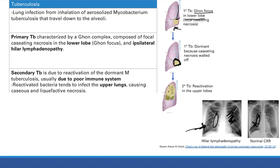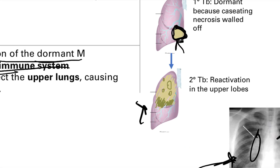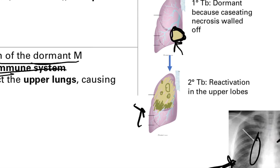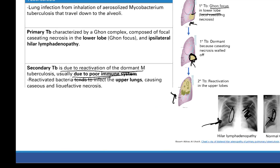You can get secondary TB if you reactivate this dormant TB, usually due to a poor immune system. If you have HIV or are using immunosuppressive drugs, you're going to get reactivation of the dormant TB. It's going to move up to the upper lungs and cause cavitary and liquefactive necrosis.